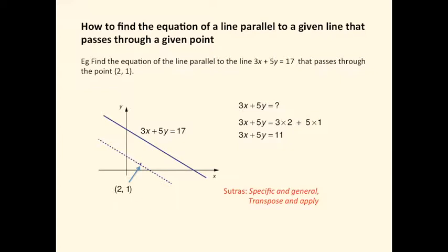Substitute them into the left-hand side to evaluate the right-hand side. So you have 3 times 2 plus 5 times 1 equals 11. Therefore, 3x plus 5y equals 11 is the equation of the parallel.